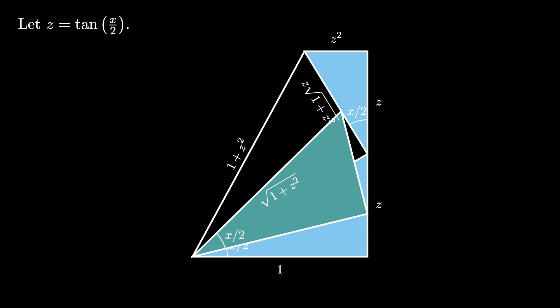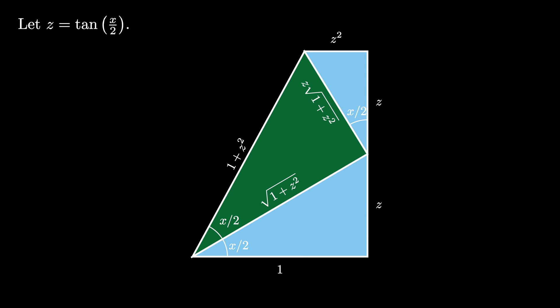Amazingly this new triangle formed inside is similar to the original triangle, as we can see that it is simply scaled by the value square root of 1 plus z squared. So this triangle also has an angle of x over 2.